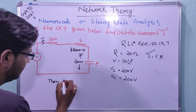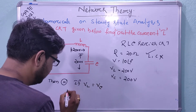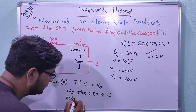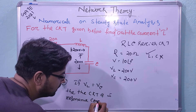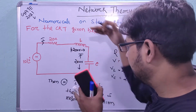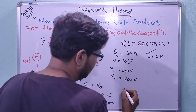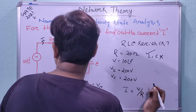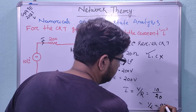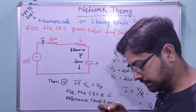Condition 3 applies here: if VL = VC, then the circuit is in resonance condition. Here VL = 200 V and VC = 200 V, so VL = VC, confirming resonance. At resonance, I = V/R = 10/20 = 0.5 ampere. This is the resonance condition problem, which is one of the GATE problems.